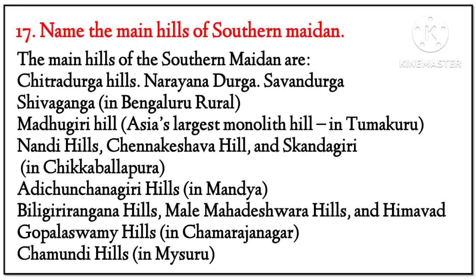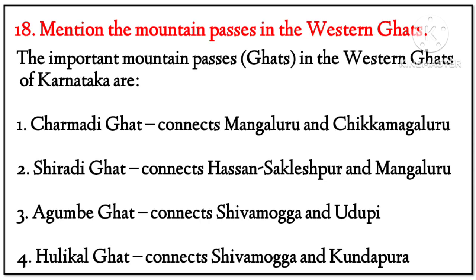Question 17: Name the main hills of the southern Maidan. Answer: The main hills of the southern Maidans are Chitradurga Hills, Narayanadurga, Shivanadurga, Shivaganga in Bangalore Rural, Madhugiri Hills — Asia's largest monolithic hill — in Tumkuru, Nandi Hills, Chennakeshava Hills, Skandagiri in Chikkaballapur, Hadinahunchanagiri Hills in Mandya, Biligiri Rangana Hills, Malamahadeswara Hills, Himavad Gopalaswami Hills in Chamarajanagar, and Chamundi Hills in Mysore. Question 18: Mention the mountain passes in the western Ghats. Answer: The important mountain passes in the western Ghats of Karnataka are: Charmudi Ghat connects Mangaluru and Chikkamagaluru; Shiradi Ghat connects Sakleshpur and Mangaluru; Agumbe Ghat connects Shivamogga and Udupi; Pulikal Ghat connects Shivamogga and Kundapura.